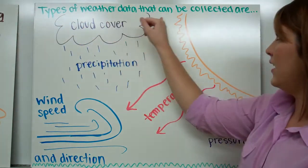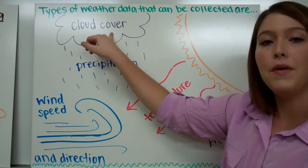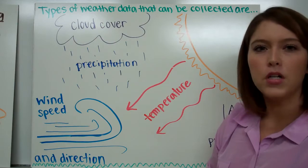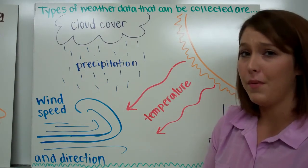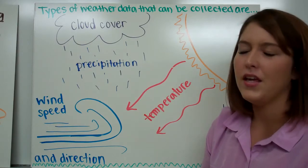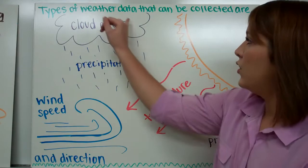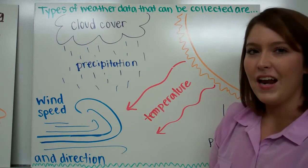There are many types of weather data that can be collected. Cloud cover can be considered in what form of clouds we see in the sky. There are multiple different types of clouds, and also how much of the sky is being covered by these clouds. It can be partly cloudy, partly sunny, cloudy or sunny. The cloud cover is one thing that we can consider to help us collect data about our weather.